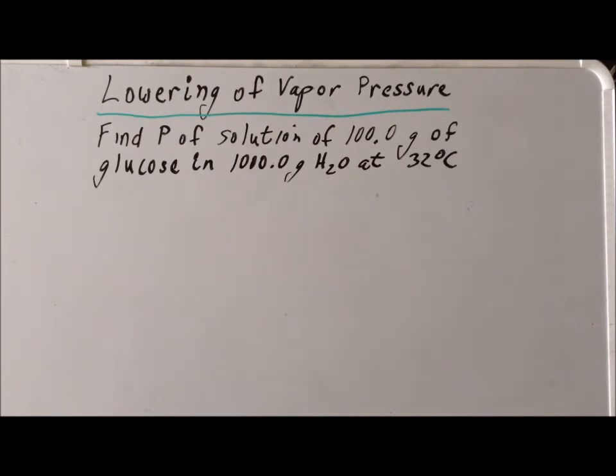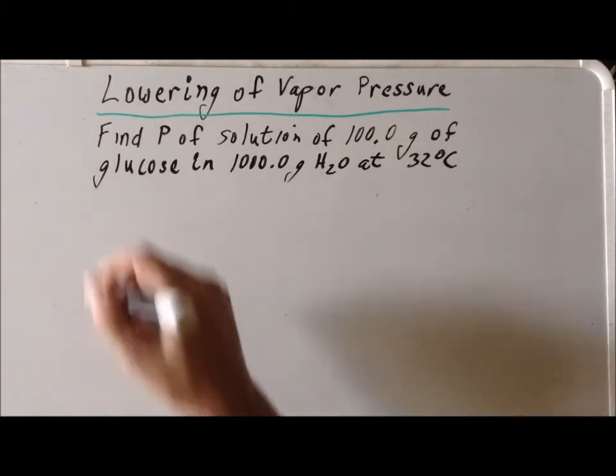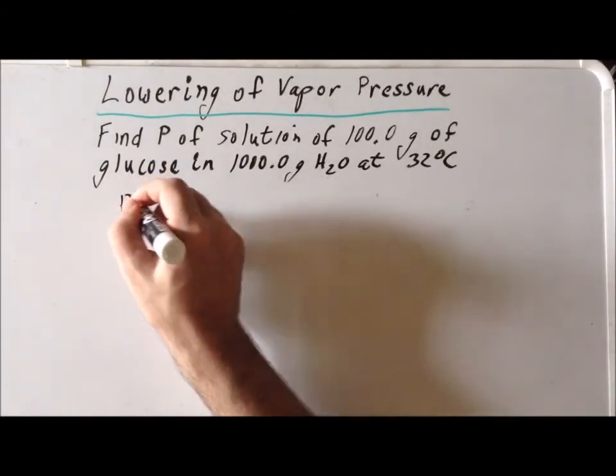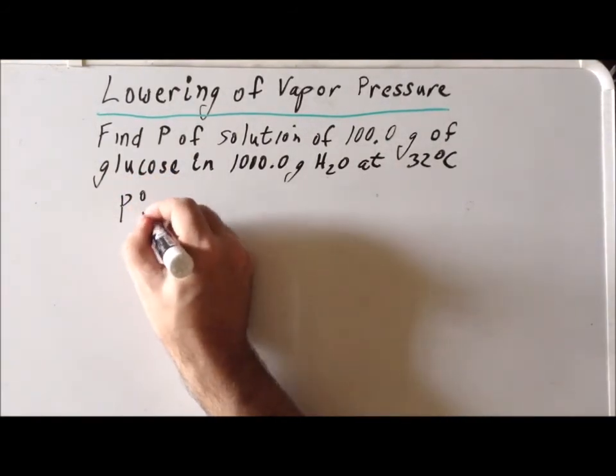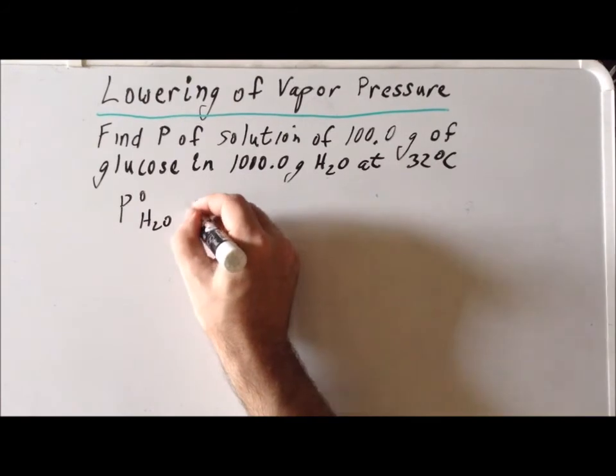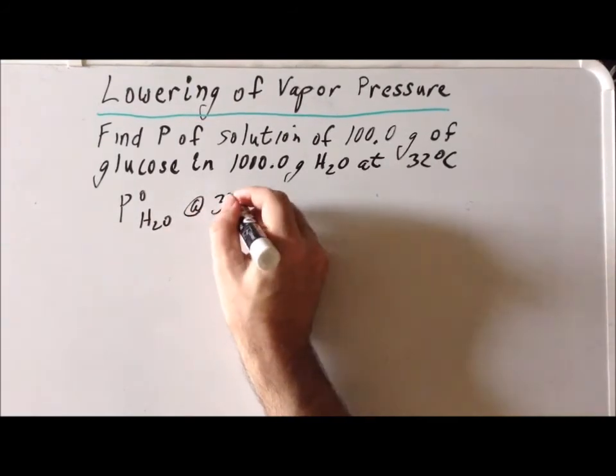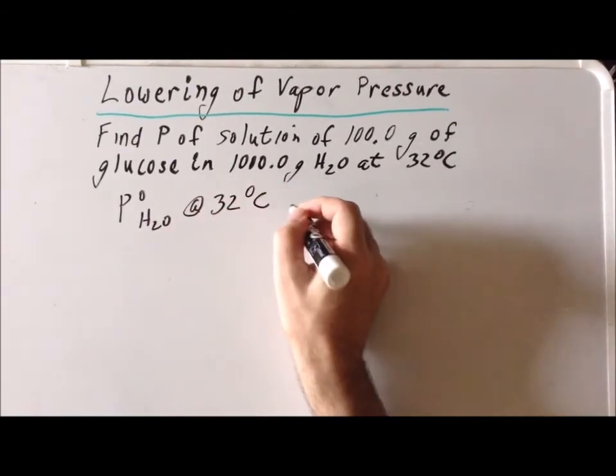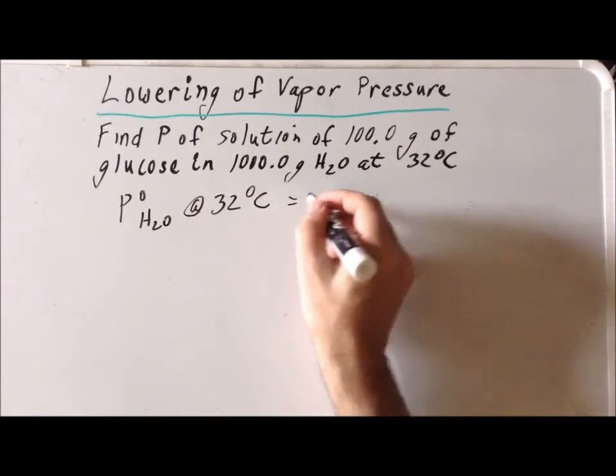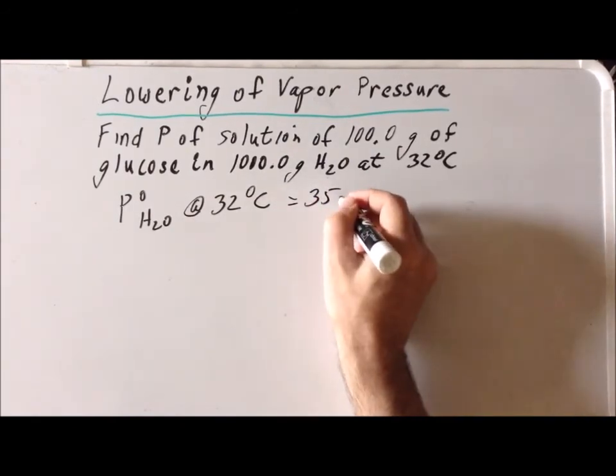We require only one additional piece of information, and that is the vapor pressure of pure water at a temperature of 32 degrees Celsius. If we looked it up, we find that it is 35.7 Torr.